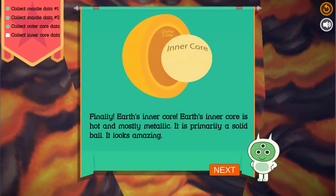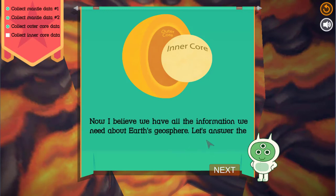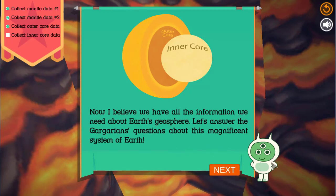Finally. Earth's inner core. Earth's inner core is hot and mostly metallic. It is primarily a solid ball. It looks amazing. Now I believe we have all the information we need about Earth's geosphere. Let's answer the Gargarians' questions about this magnificent system of Earth.